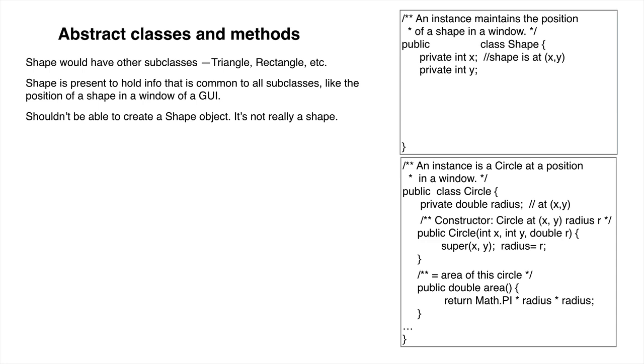In order to prevent users from creating instances of class Shape, make Shape abstract by putting keyword abstract between public and class. Doing that makes the expression new Shape illegal. If you use it, your program won't compile.